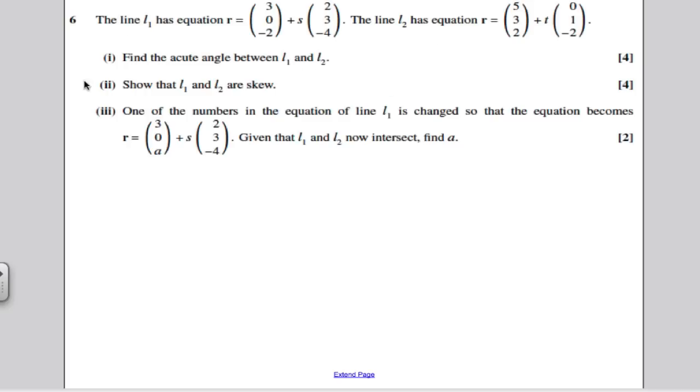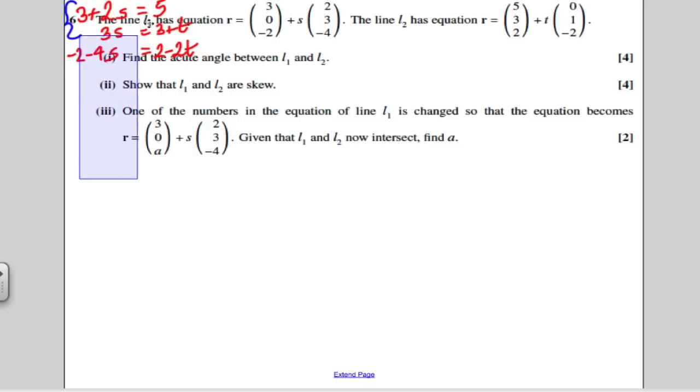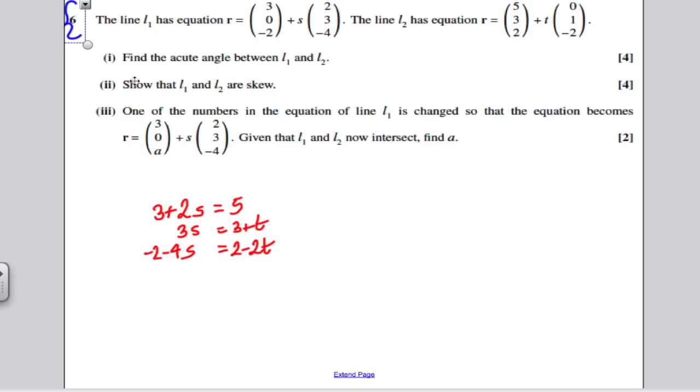Well, all we have to do is go back to our previous equations. We said that L1 and L2 intersected if the following sets of equations held. So I'm just going to take these equations here, just take them right now here. Now bear in mind, we said that 3 plus 2 lots of S would be equal to 5. 0 plus 3 lots of S would be equal to 3 plus T. And now what we've done, this minus 2, this would now become the number A. So I'm going to change that for A. A minus 4S must equal 2 minus 2T. And here are our equations, 1, 2 and 3.